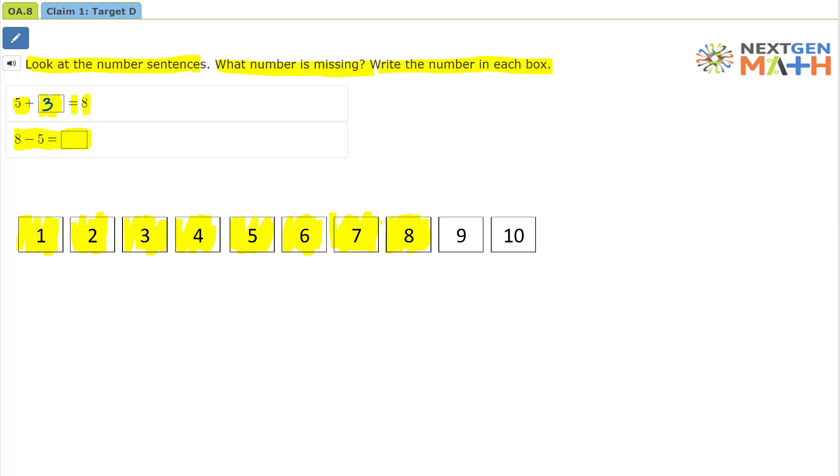We're now going to subtract 5. And this is how we'll subtract 5. 1, 2, 3, 4, 5. So we had 8, we subtracted 5, and we end up with 3. So 8 minus 5 equals 3.